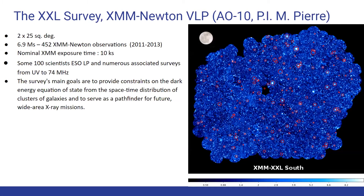In this project, we use data from the XXL survey. The XXL survey is the largest XMM-Newton project approved to date, covering two 25-square-degree fields: the northern one and the southern one. The two fields have extensive multi-wavelength coverage from X-ray to radio. Approximately 450 new galaxy clusters have been detected up to redshift 2, and about 2000 AGN up to redshift 4. The red circles correspond to detected clusters and the luminous dots are the detected AGN.